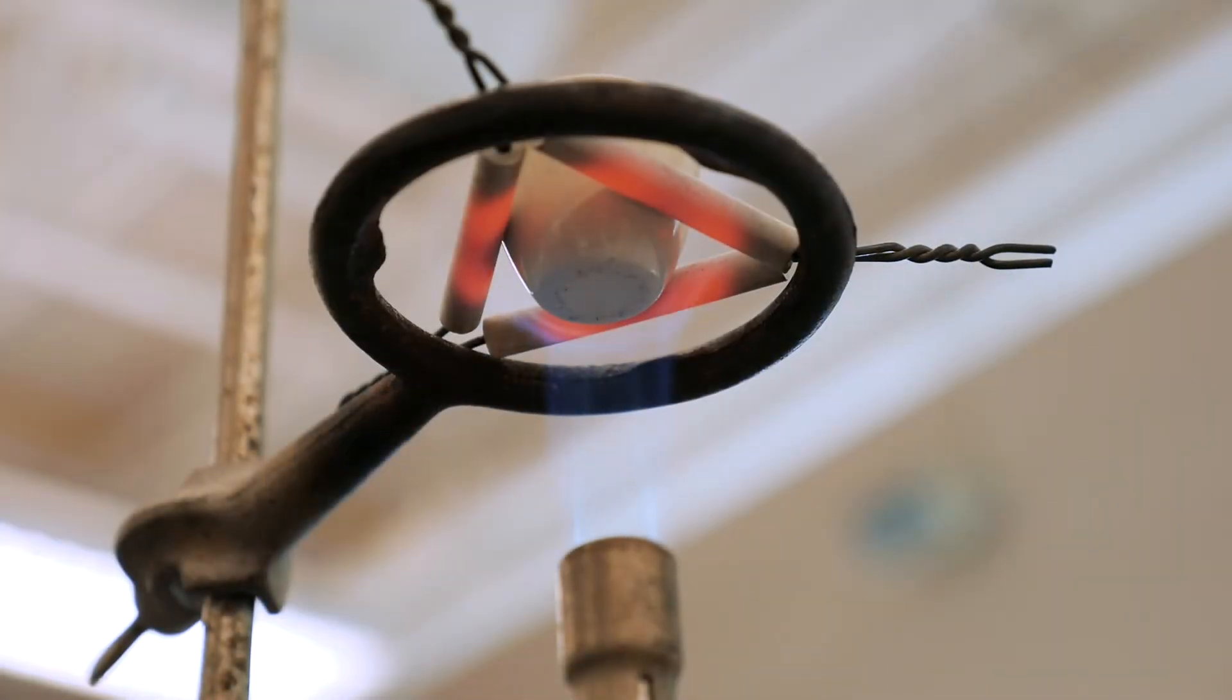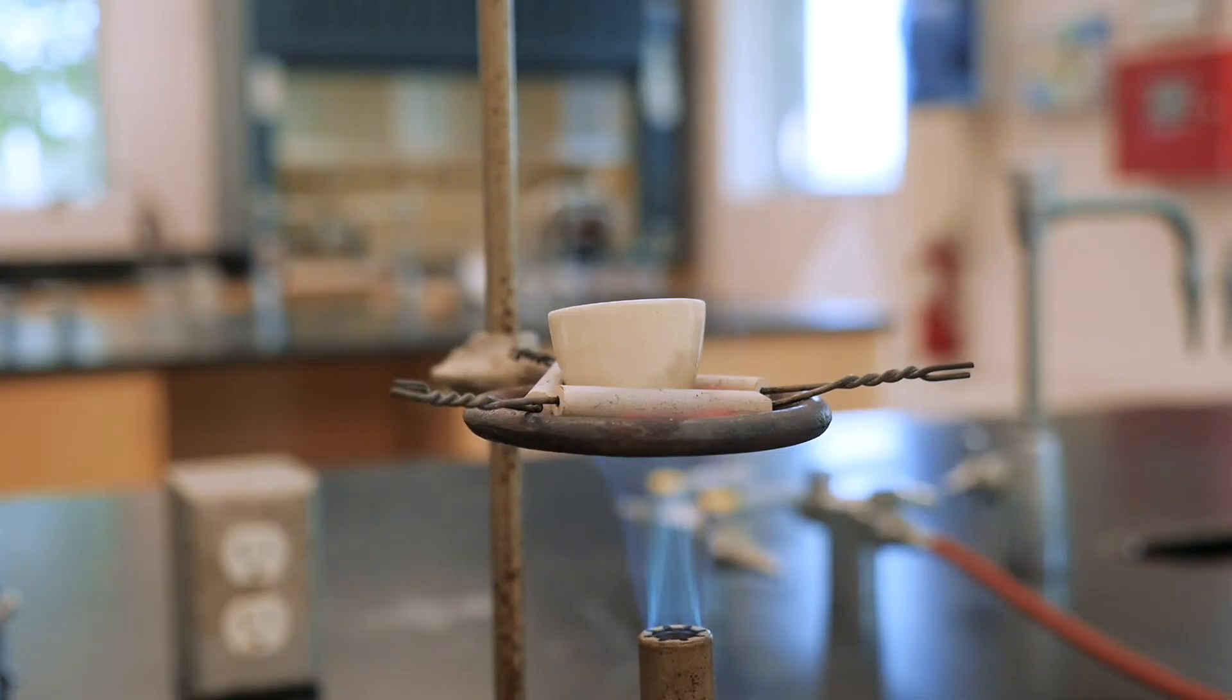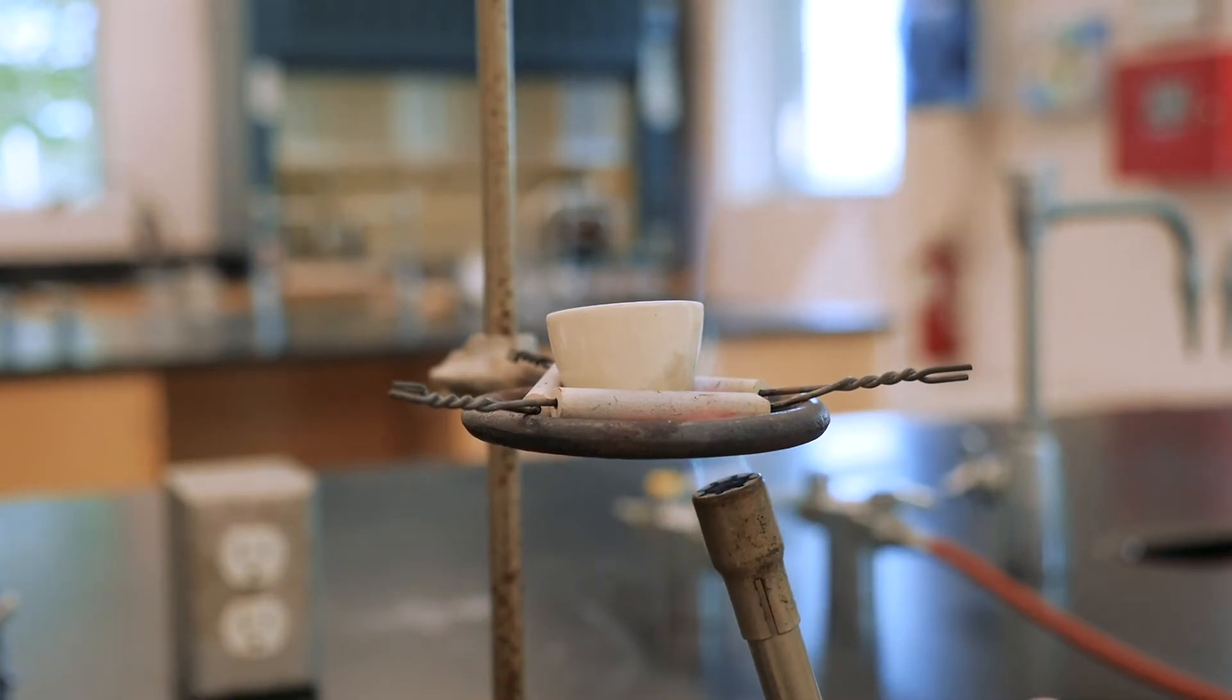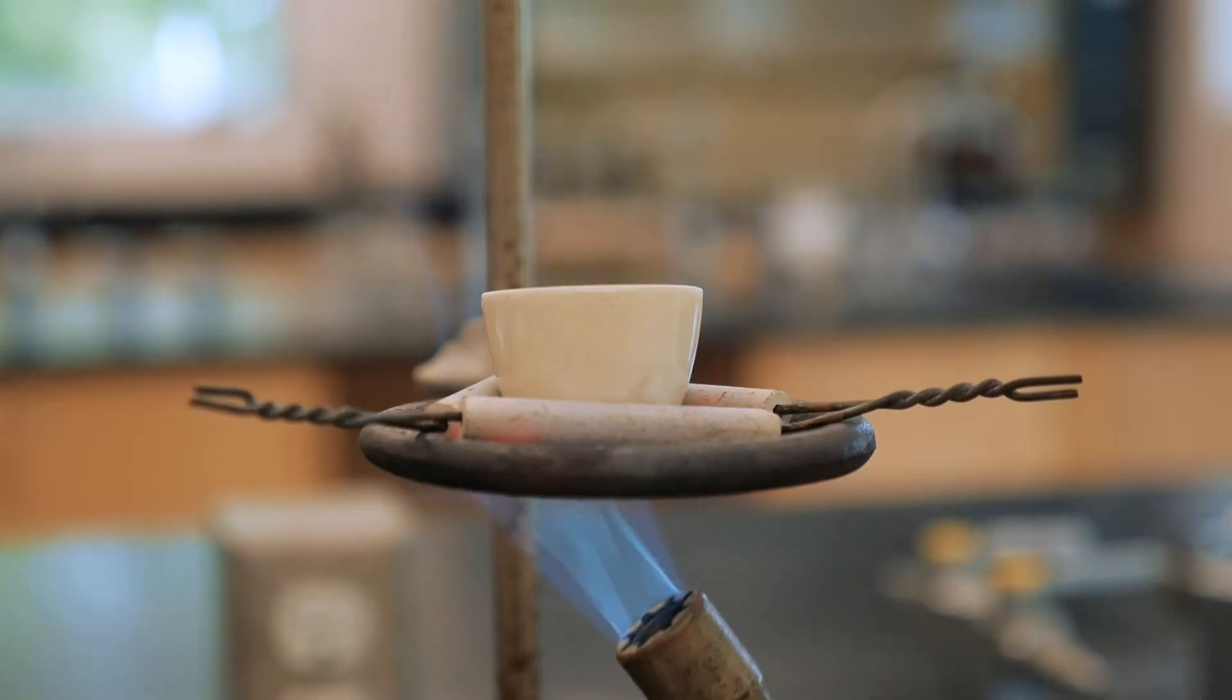As you're heating, sometimes you can see a black deposit forming on the crucible. This is carbon from the flame, and it can throw off your mass measurements later, so it needs to be removed. You can use the direct force of the flame to burn it off.